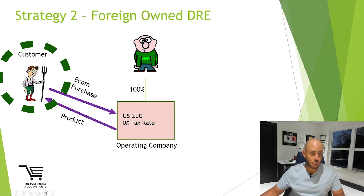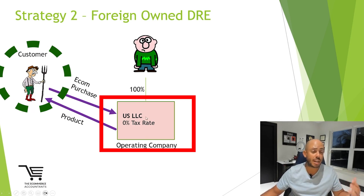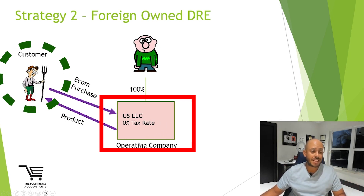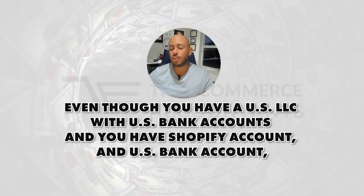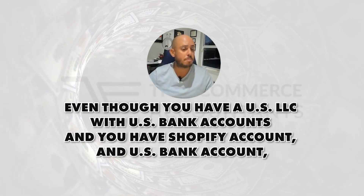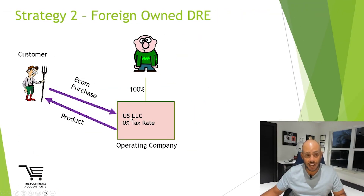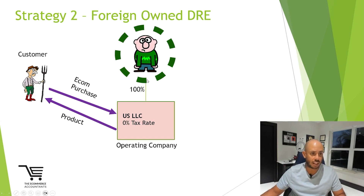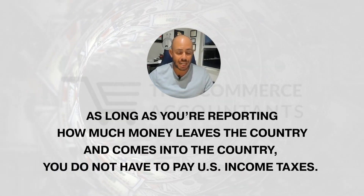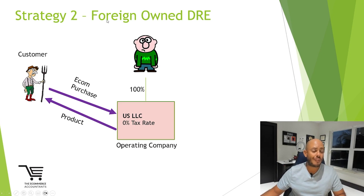Basically, if customers purchase products from this U.S. LLC, products get shipped out — ideally through dropshipping, not only from China or even U.S.-based suppliers — nothing in that fact pattern would be considered effectively connected income. Therefore, even though you have a U.S. LLC with U.S. bank accounts, a U.S. Shopify account, everything, you do not have income taxes in the U.S. You're actually able to transfer cash back to your foreign country, whether that's you as an individual or a foreign entity that owns this U.S. LLC. We call this a foreign-owned DRE, or foreign-owned disregarded entity.